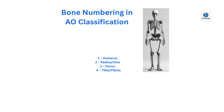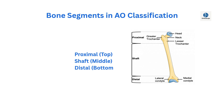Bone numbering system. The first number identifies the bone. One is the humerus, two is the radius or ulna, three is the femur, four is the tibia or fibula. Each bone is divided into three segments: one is the proximal end, two is the shaft or diaphysis, three is the distal end.